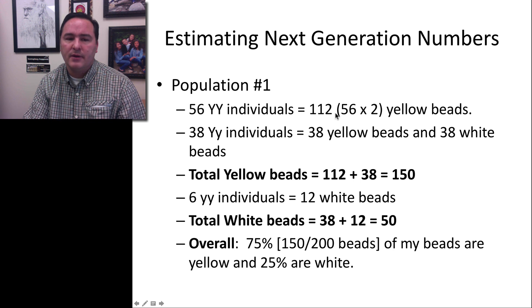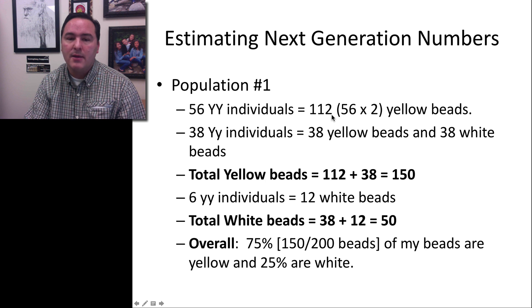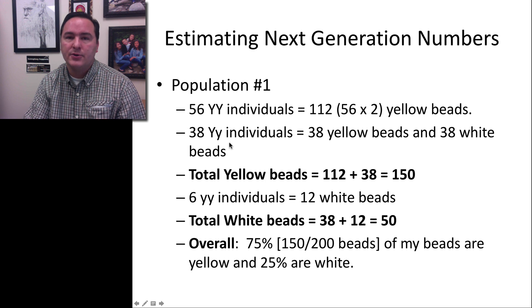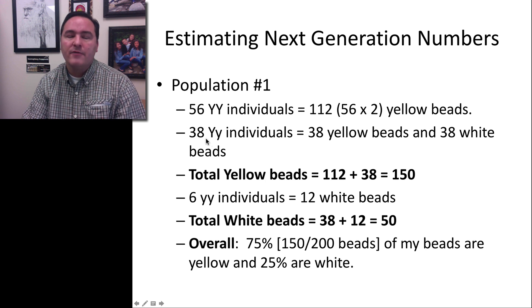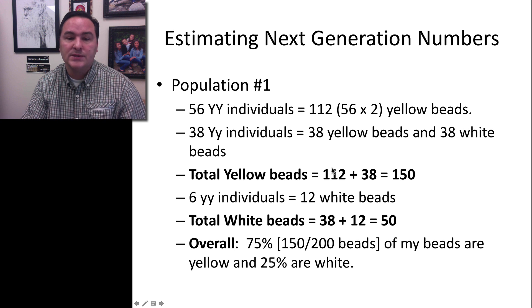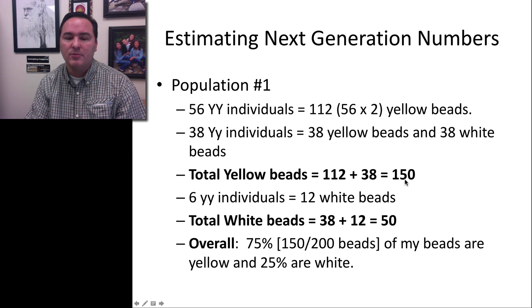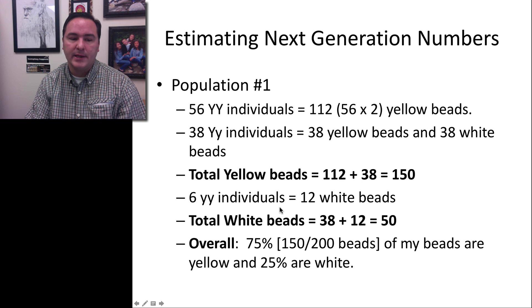Well, we know that because there's 56 big Y big Y, that's 56 times 2, 112 yellow beads. From the 38 big Y little y individuals, that is 38 more yellow beads. So we get 112 plus 38 equals 150 yellow beads.